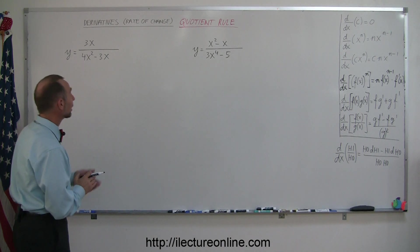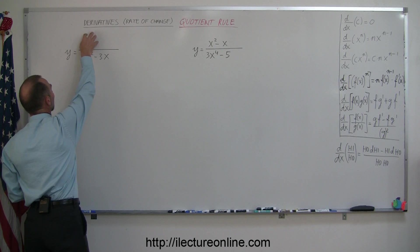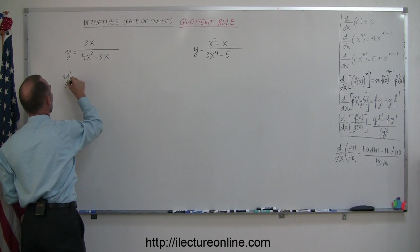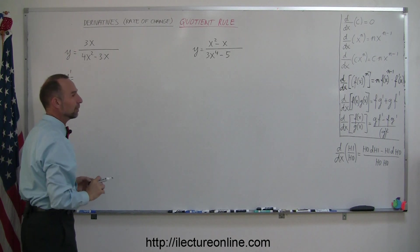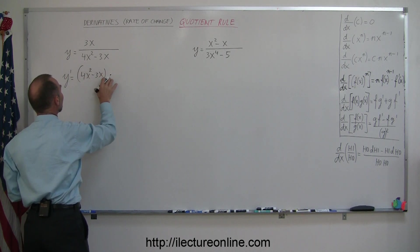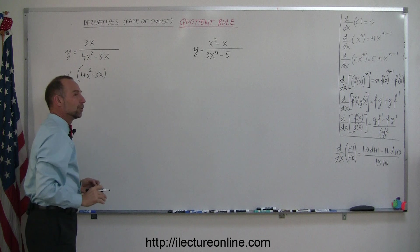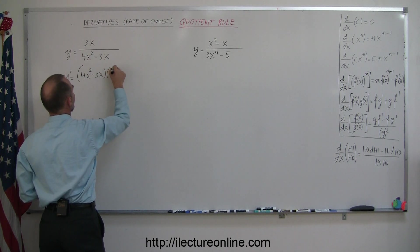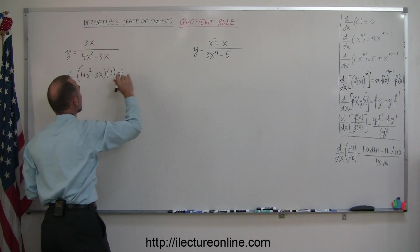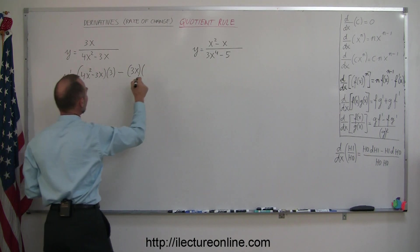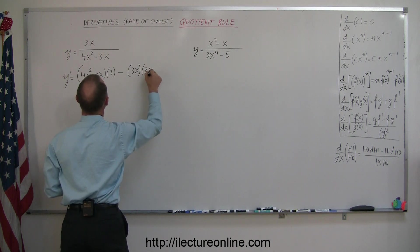Let's apply that little trick to our equations here. Imagine this to be the function in the numerator and the function in the denominator. If we want to take the derivative y', we take the denominator 4x² - 3x times the derivative of the numerator or d-hi. The derivative of 3x is simply 3, minus